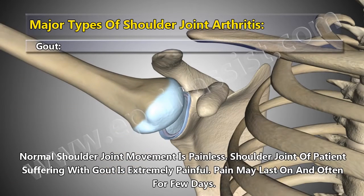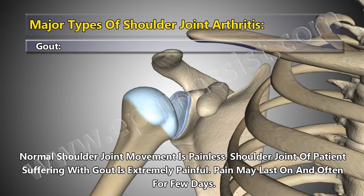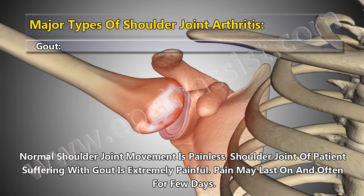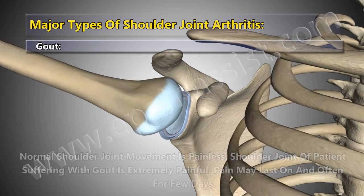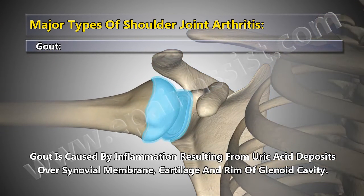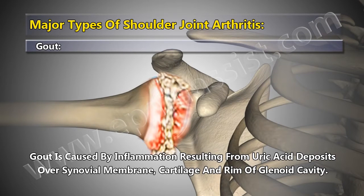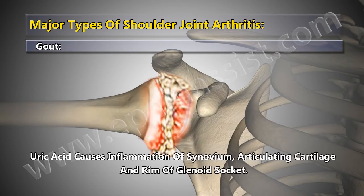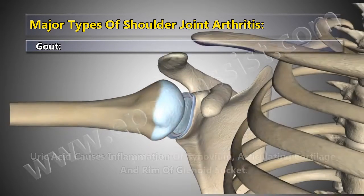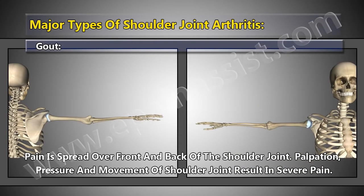Gout. Normal shoulder joint movement is painless, but the shoulder joint of a patient suffering with gout is extremely painful. Pain may last on and off for a few days. Gout is caused by inflammation resulting from uric acid deposits over the synovial membrane, cartilage, and rim of the glenoid cavity. Uric acid causes inflammation of the synovium, articulating cartilage, and rim of the glenoid socket.